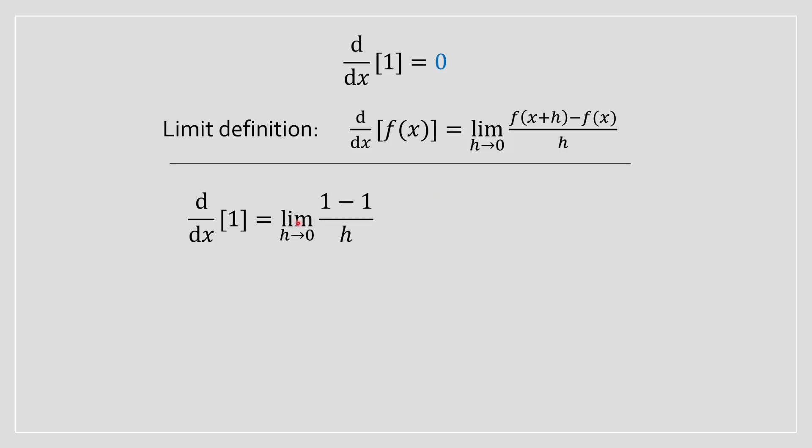you lot will obtain a limit that looks like this. And right away, you can basically do the numerator equal to 0, because 1 minus 1 is equal to 0. And you're going to have 0 divided by h.